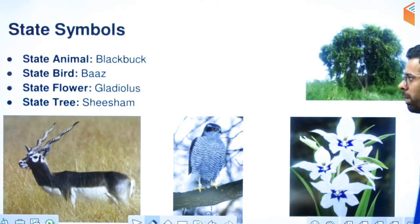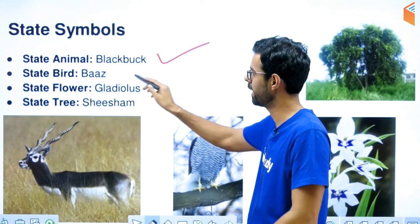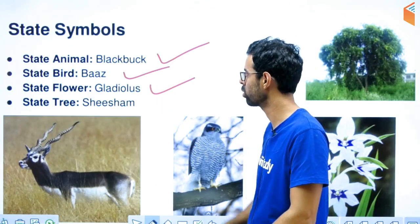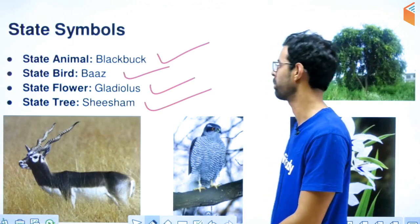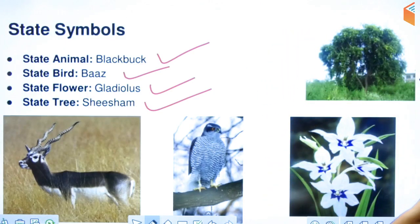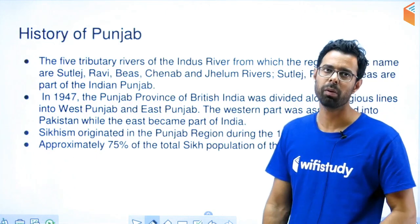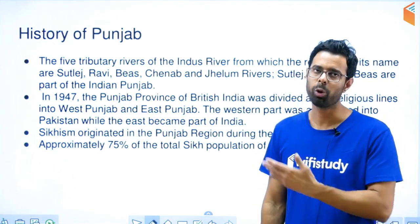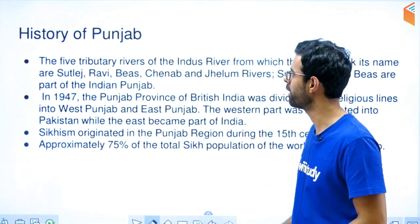Let's talk about the state symbols. The state animal is the black buck, state bird is the Northern Goshawk, state flower is Gladiolus, and state tree is also listed. Recently, the aquatic animal — the Ganga dolphin — was also included as a state symbol.